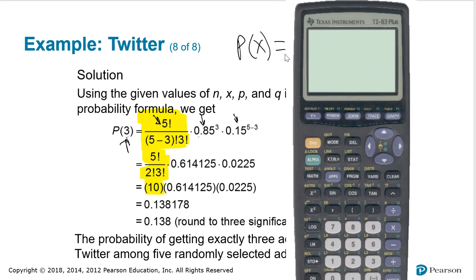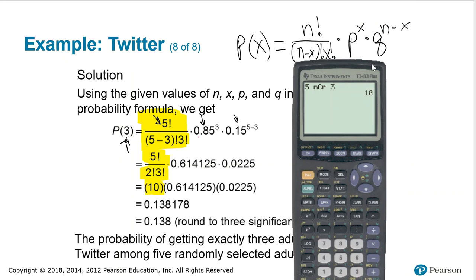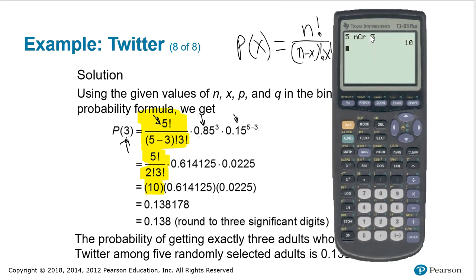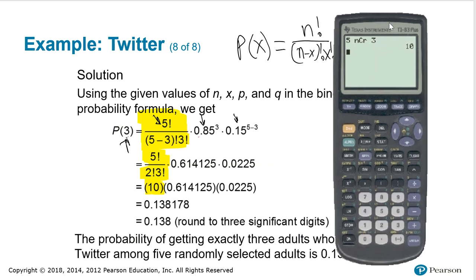In order to do that, the first thing I have to do is enter the n, in this case it's five, then I go to my math PRB menu, go down to the one I want, which is nCr, make sure you do the one that's C in the middle, press enter, and then press three, and enter, and you notice it returns that number ten.